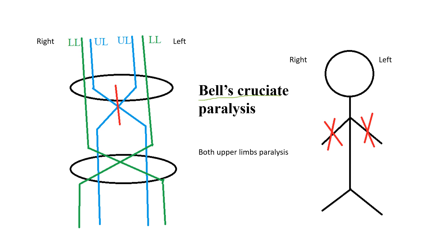We also have another term called Bell's cruciate paralysis. Here the lesion is at the site of crossing of the upper limb fibers alone, so both the upper limbs are affected. This is called Bell's cruciate paralysis. This is all we need to know about cruciate hemiplegia. Thank you.